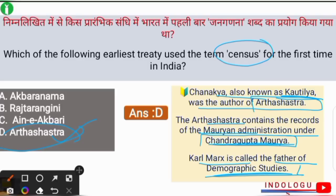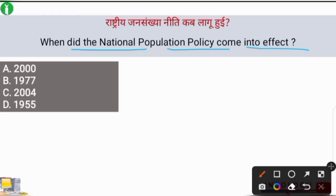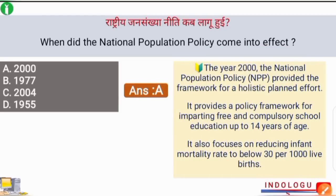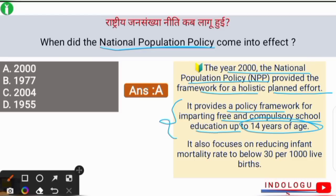Next question: when did the National Population Policy come into effect? The correct answer is option A — 2000. The National Population Policy of the year 2000 provided the framework for a holistic planned effort, including free and compulsory school education up to 14 years of age, and focused on reducing the infant mortality rate to below 30 per thousand live births.